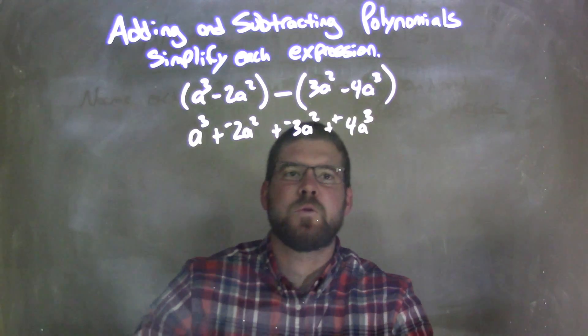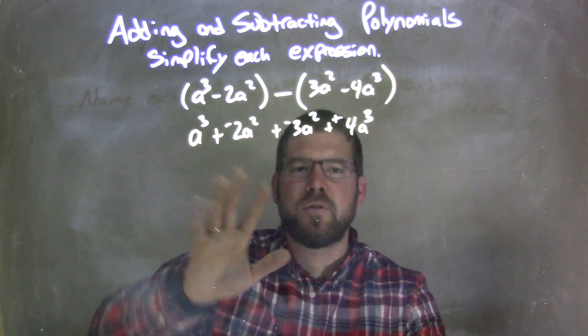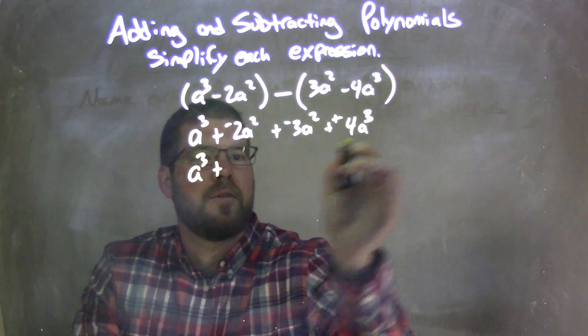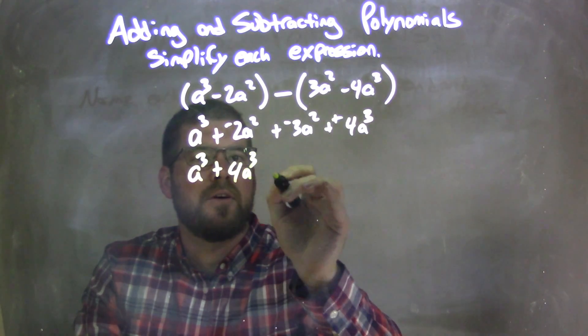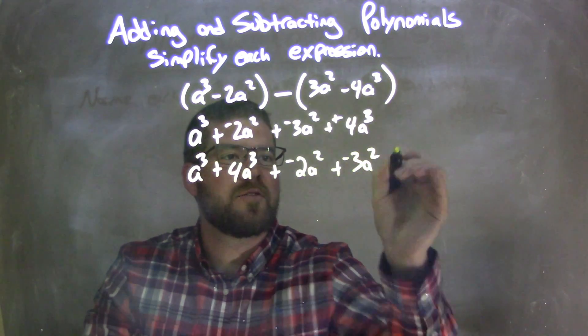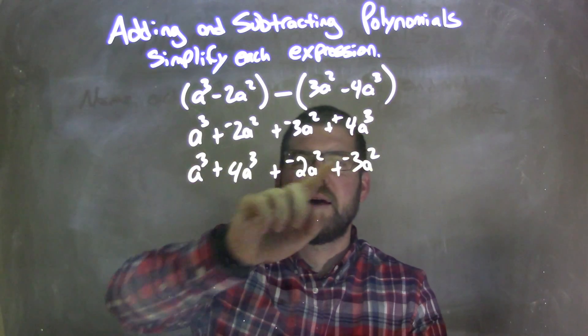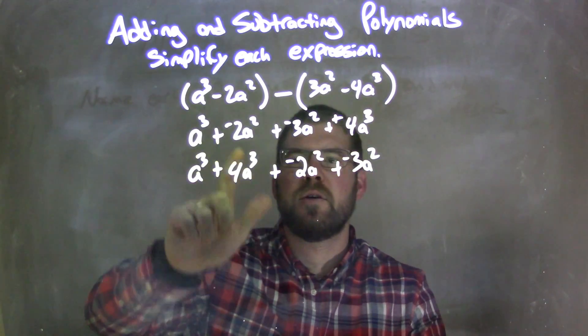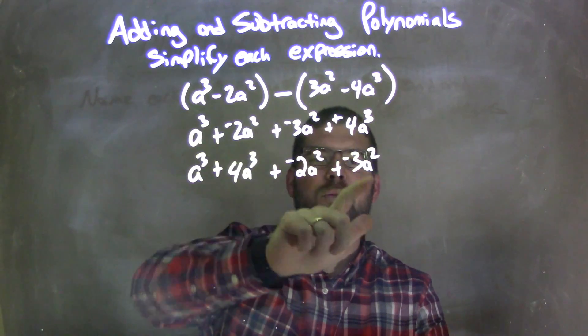Now I'm going to rearrange from my highest degree to lowest degree terms. So we have a to the third plus 4a to the third plus a negative 2a squared plus a negative 3a squared. Notice I'm getting all my terms together. I have a to the third, then 4a to the third, then negative 2a squared, and then negative 3a squared.